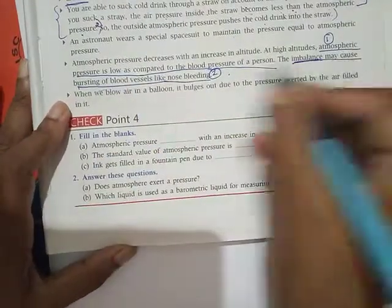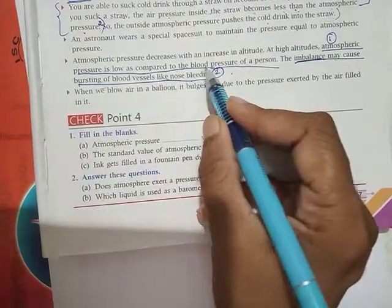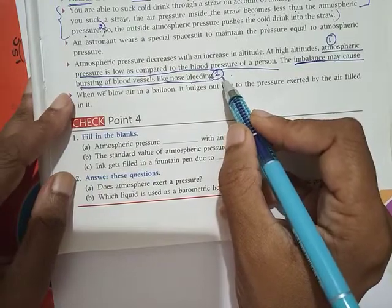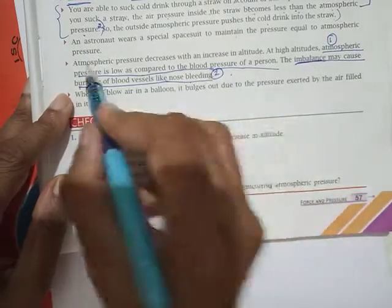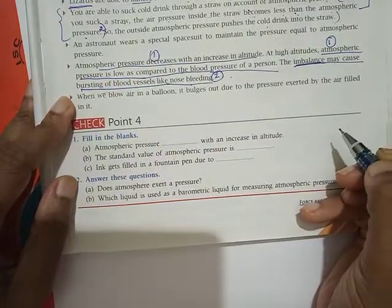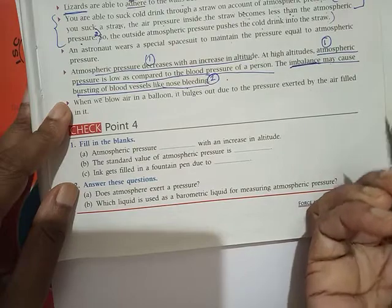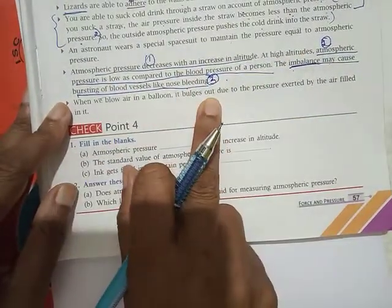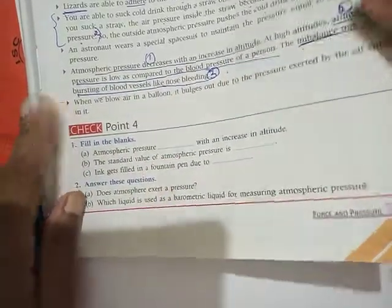And why some people have nose bleeding? Both the points should be there. Atmospheric pressure is low as compared to the blood pressure. Main thing is this one: atmospheric pressure decreases with increase in altitude. So what happens? Our inside pressure becomes more. Outside pressure is now less. So to balance it, it comes out. All the three points has to be written. Atmospheric pressure decreases with increase in altitude at high altitudes.